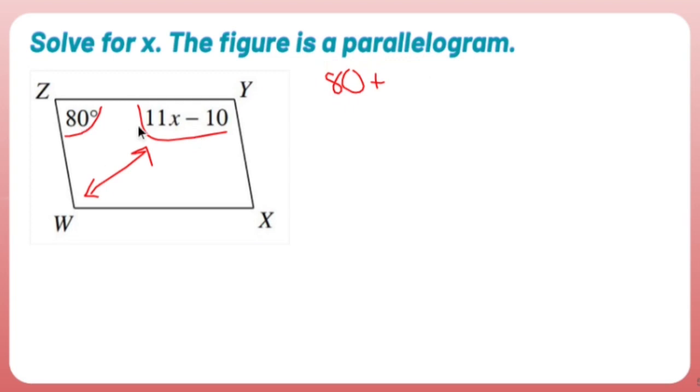So 80 plus 11x minus 10 equals 180. Combine like terms, so 80 minus 10 is 70. So 70 plus 11x equals 180.